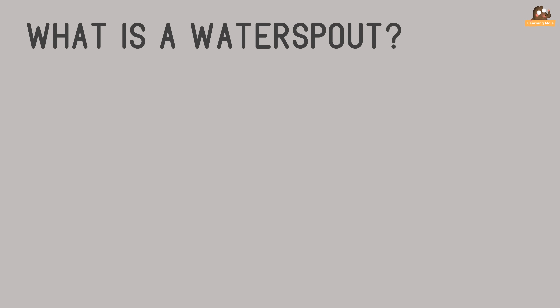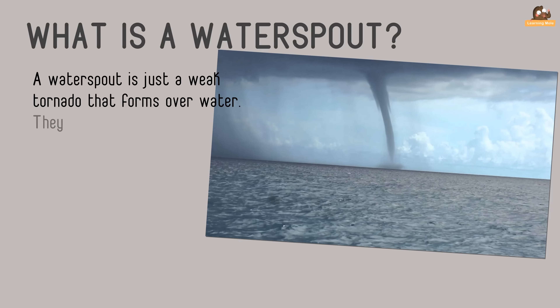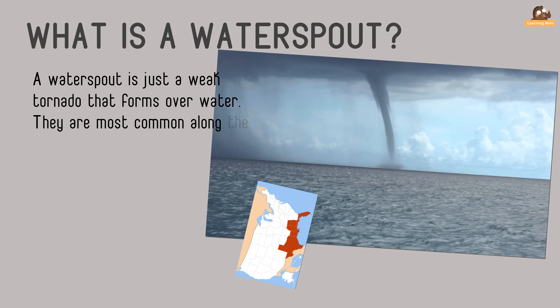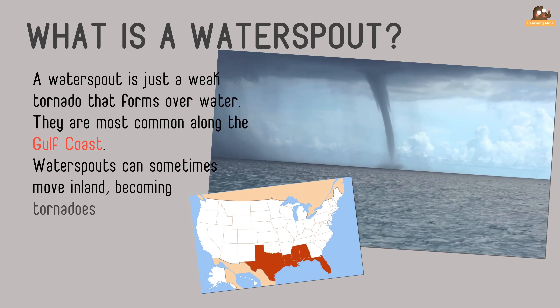What is a waterspout? A waterspout is just a weak tornado that forms over water. They are most common along the Gulf Coast. Waterspouts can sometimes move inland, becoming tornadoes and causing damage and injuries.